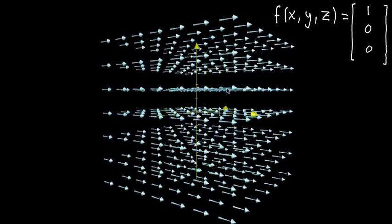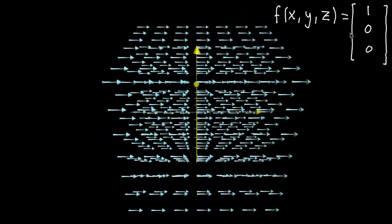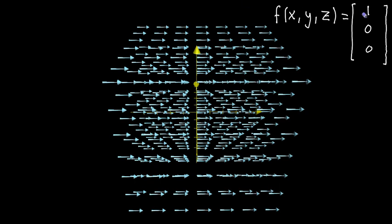So, as vector fields go, this is relatively boring, but we can make it a little bit more exciting if we make the input start to depend, somehow, on the actual input. So what I'll do to start, I'll just make the input y, zero, zero. So they're still just going to point in the x direction, but now it's going to depend on the y value.